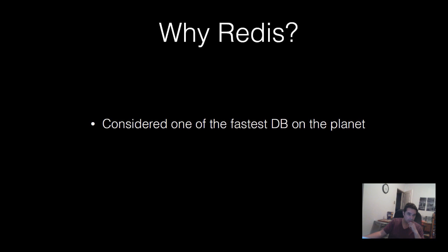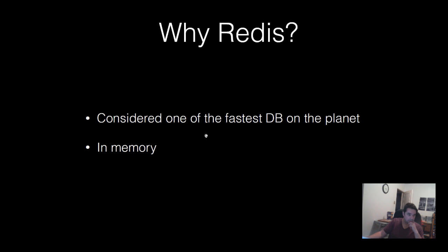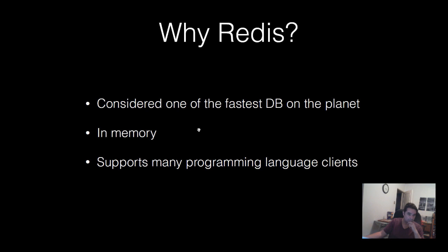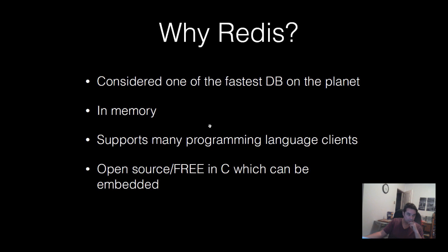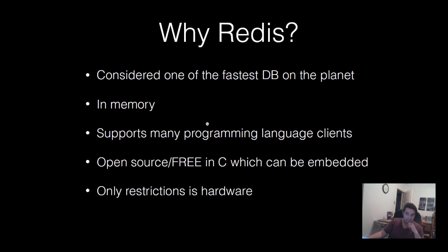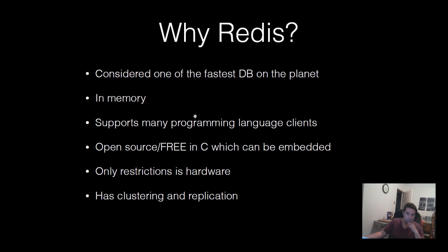People don't know a lot about Redis, but it's considered one of the world's fastest databases on the planet. Metrics include four million transactions per second. It's in-memory, which is powerful, supports many programming language clients, is open source and free, is written in C, and can be embedded into a flash memory environment. Its performance is only restricted by your hardware. Recent versions also now have clustering.